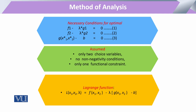इन सबको मिलाने के बाद जो condition बनती है वो यह है: पहले हमारा objective function सिर्फ x1 और x2 का function था, लेकिन अब Lagrange की शकल में यह x1, x2 और lambda पर depend करता है। यह objective function और constraint मिलकर subjective function बनाते हैं, जिसको solve करके Lagrange multiplier calculate करते हैं। किसी भी example को सामने रखकर इसको हल किया जा सकता है।